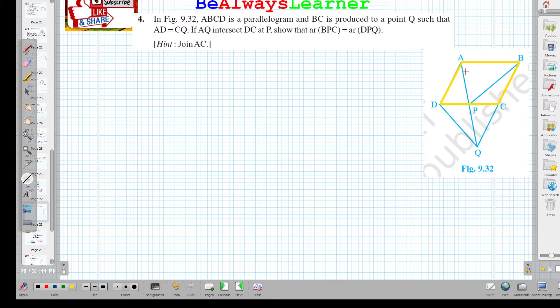BC is extended to the point Q such that AD is equal to CQ.